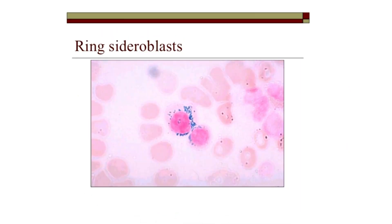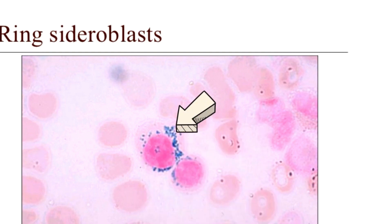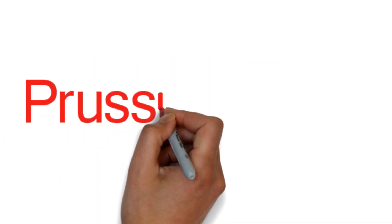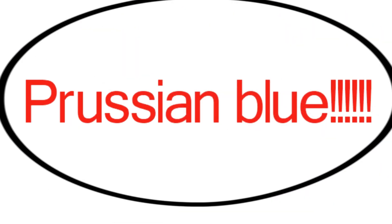Before talking about ring sideroblast, let me tell you what a sideroblast is. A sideroblast is an atypical nucleated erythroblast with granules of iron accumulated in the mitochondria, which are present in the cytoplasm but not visible in MGG or hematoxylin-eosin stain. These granules are visible only by iron stains such as Prussian blue, and they appear as blue dots in the cytoplasm.